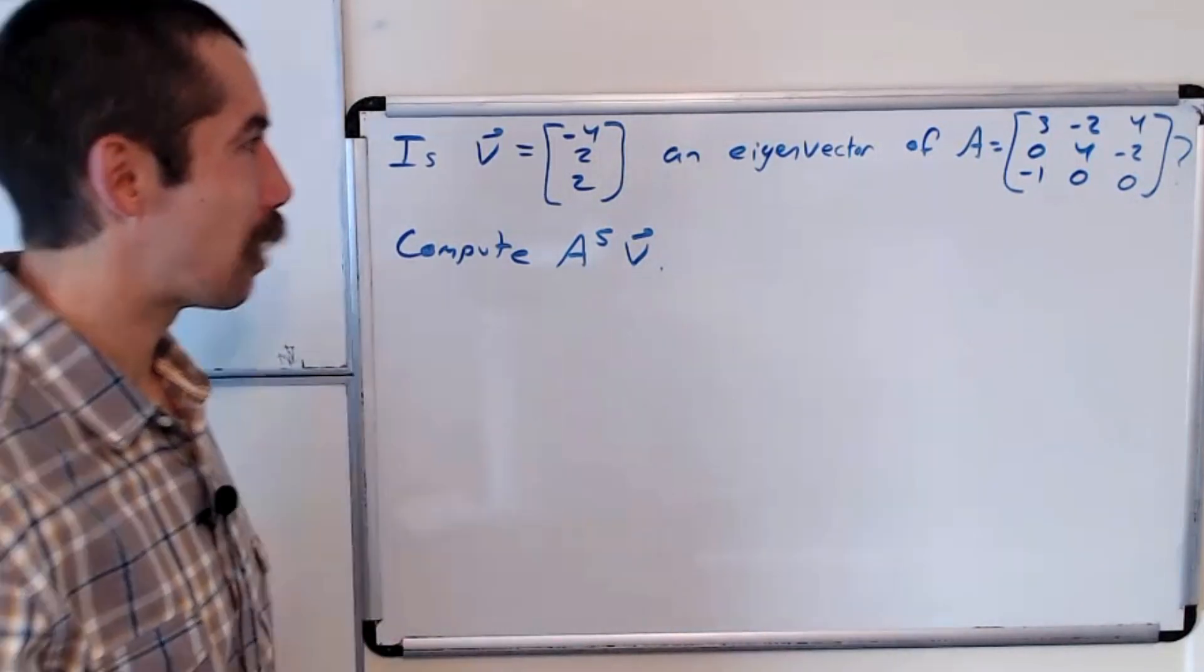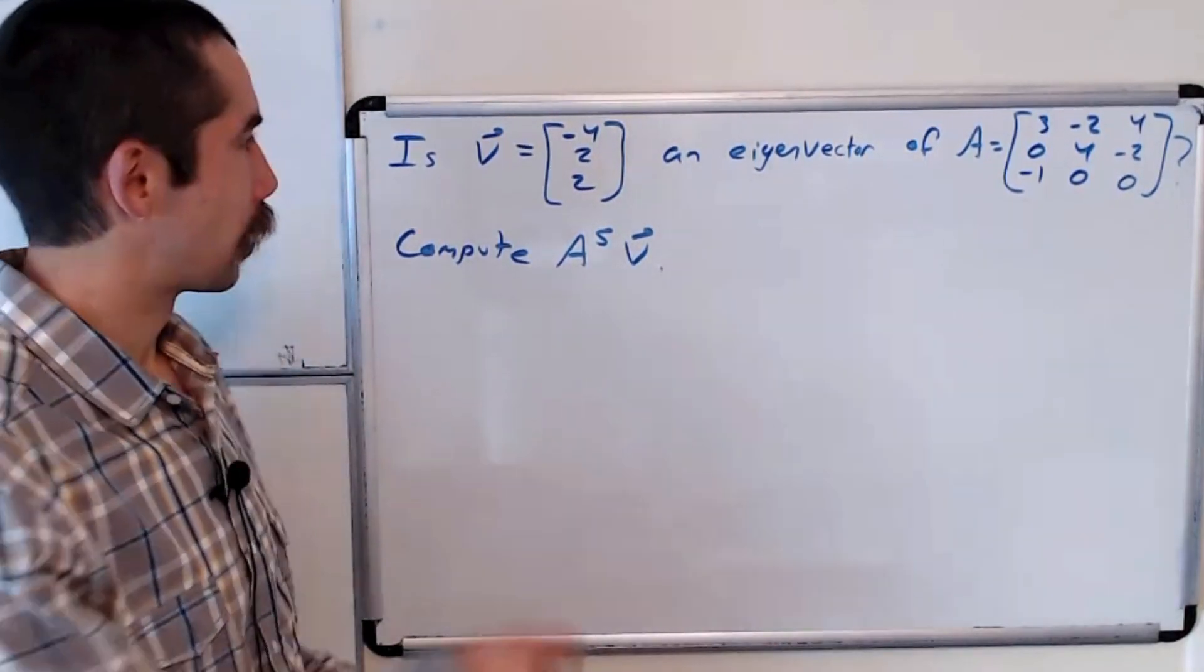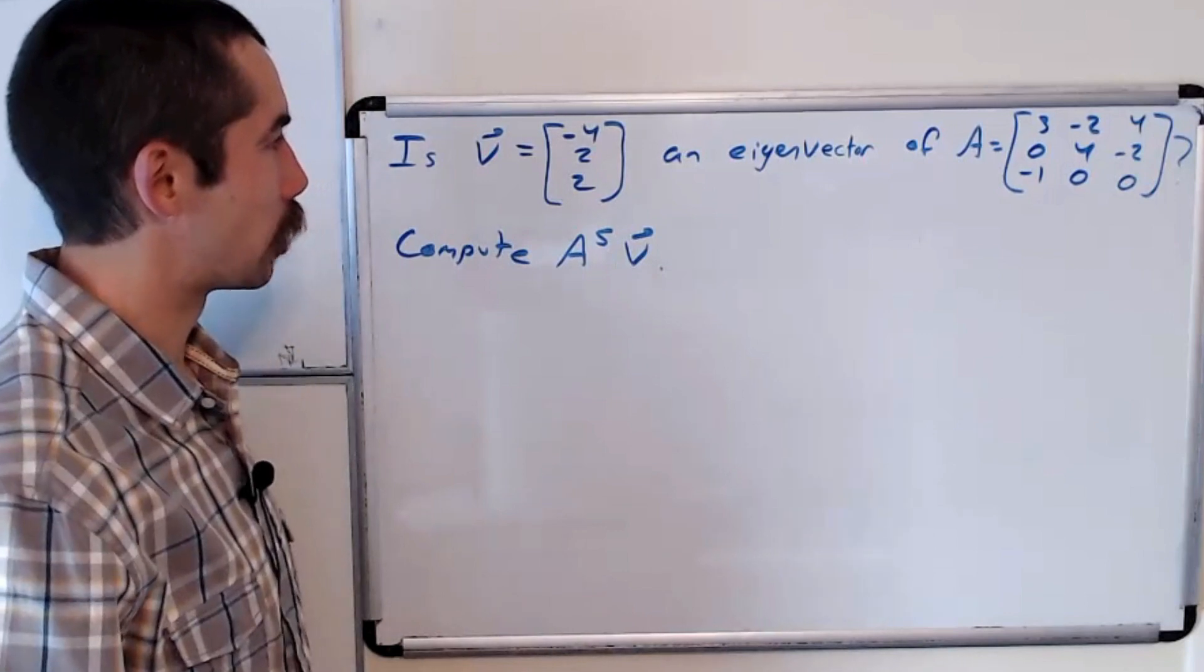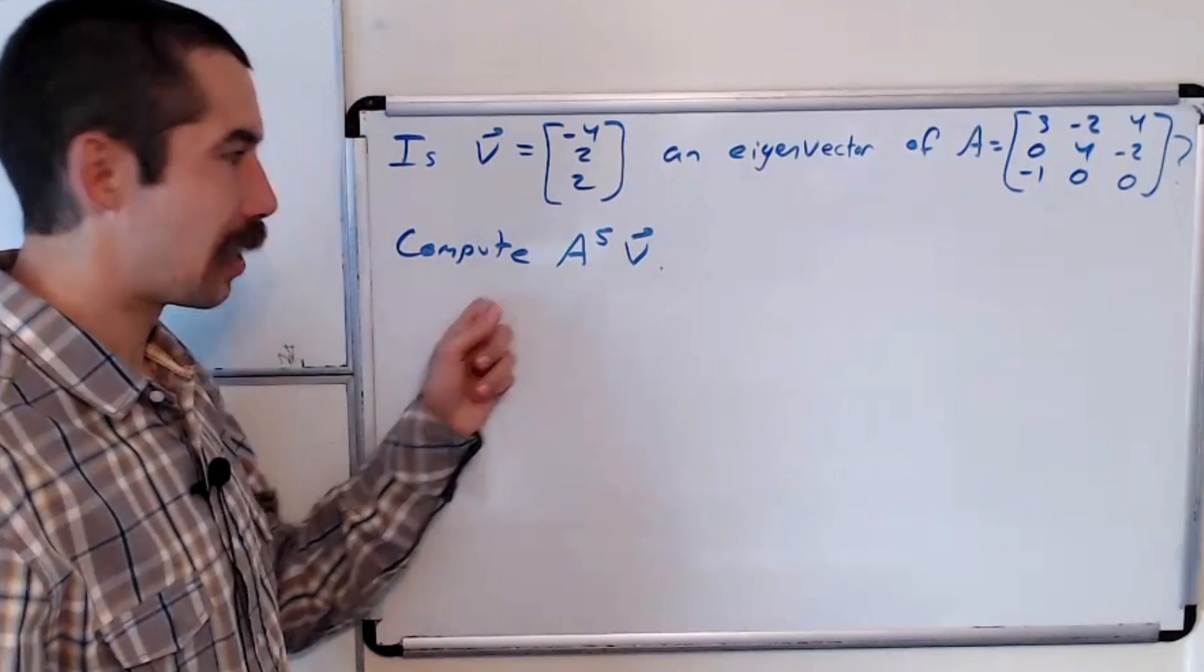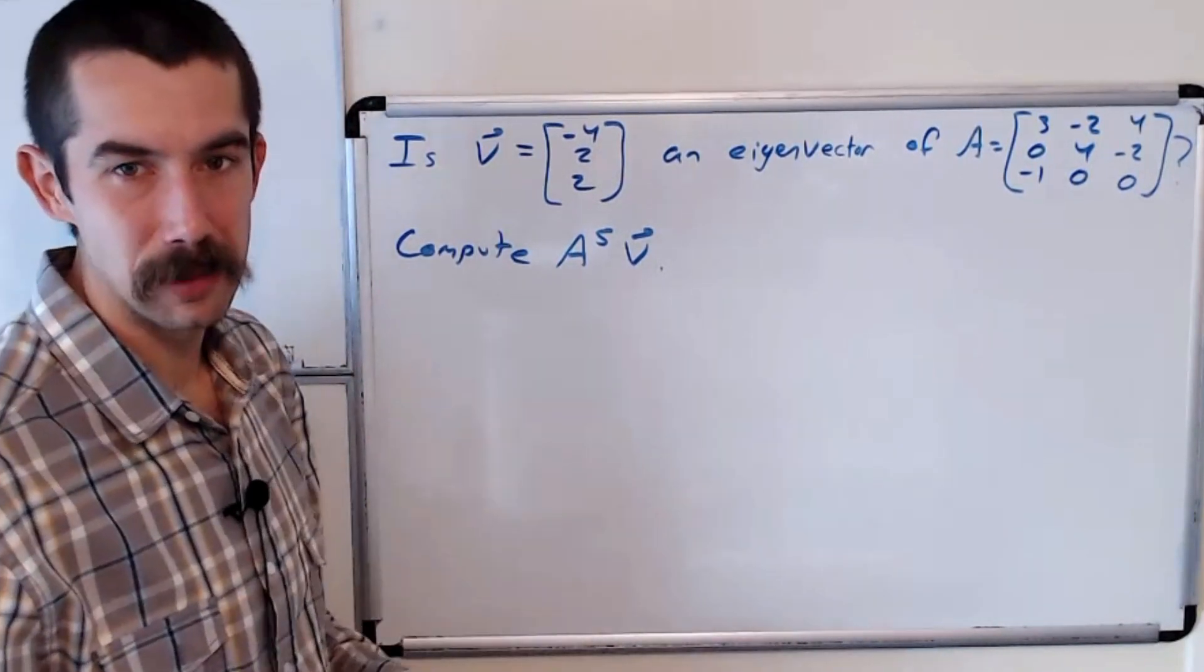Happy learning! We got a quick one about eigenvectors today. Is V, which is negative 4, 2, 2, an eigenvector of A? And then compute A to the 5th times V.